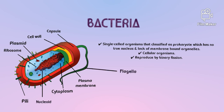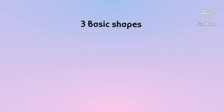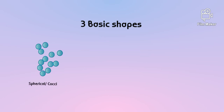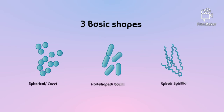Bacteria reproduce by binary fission to produce new cells. Bacteria exist in three basic shapes: spherical or cocci, rod-shaped or bacilli, and spiral or spirilla.